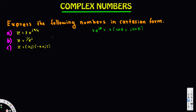In order to do that, we have to use Euler's identity, given by r·e^(jθ) = r·(cosθ + j·sinθ). Here we have to figure out what our r value is and also what our angle is. You can see this is our r value and the angle is 5π/4.